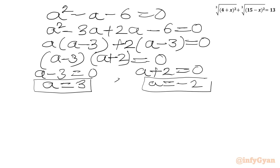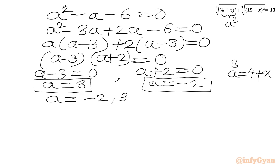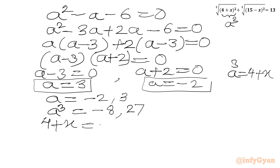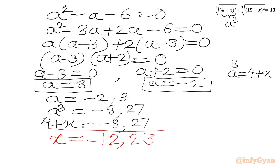Recalling the substitution a³ = 4 + x: for a = −2, a³ = −8, so 4 + x = −8, giving x = −12. For a = 3, a³ = 27, so 4 + x = 27, giving x = 23. We have two integer solutions: x = −12 and x = 23.